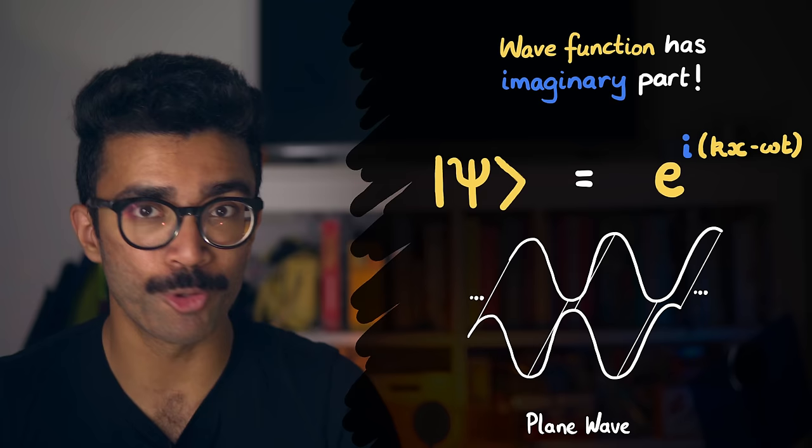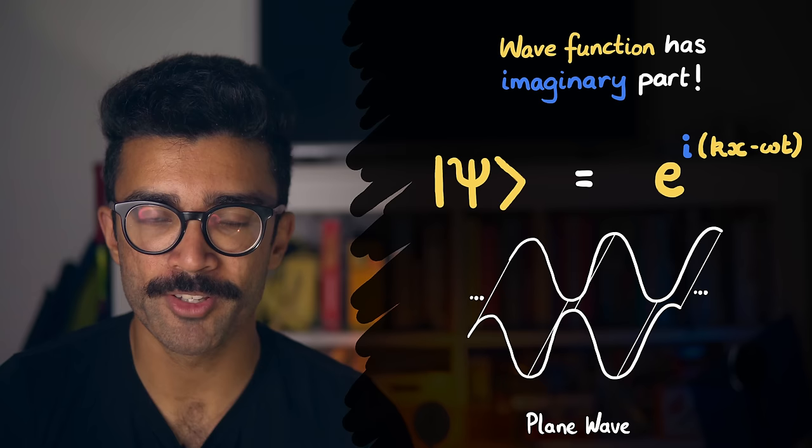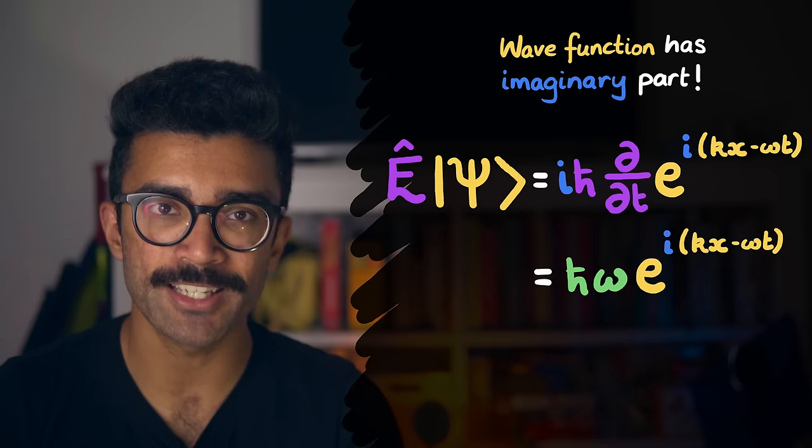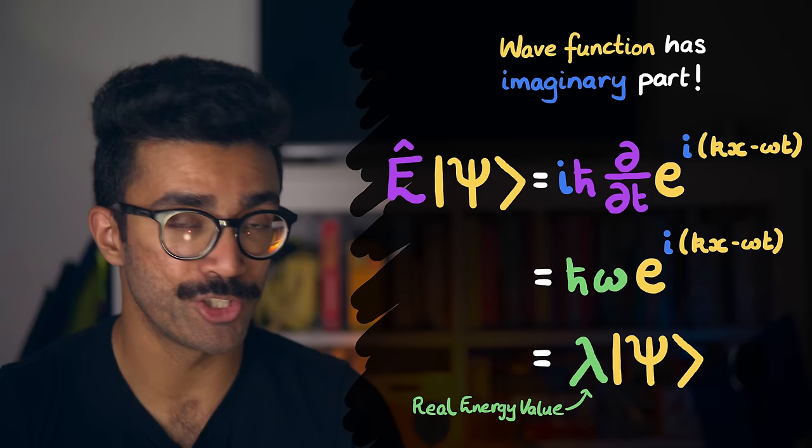So if you're familiar with imaginary numbers and differentiation, try to apply the total energy operator to this wave function and see what you get. Hopefully it should be a real value, which represents the energy of the electron.